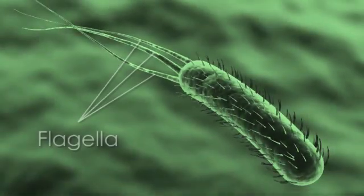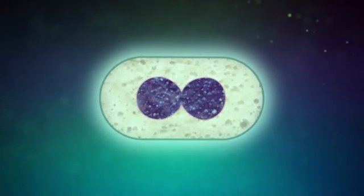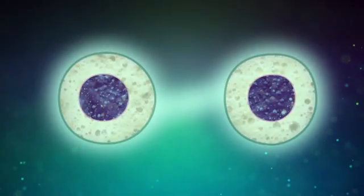Many bacteria also have flagella, whip-like structures that help them move. And all bacteria reproduce by binary fission. They grow until they split into two new identical cells.